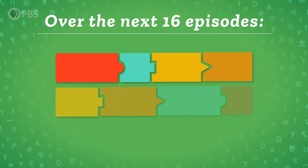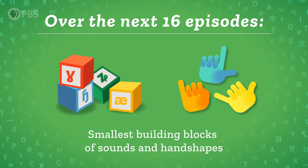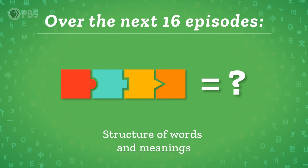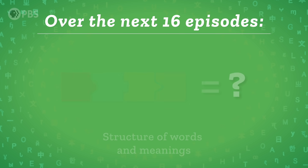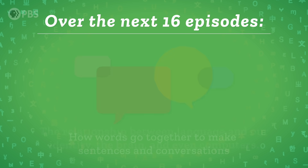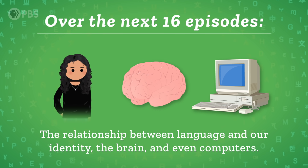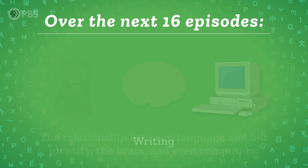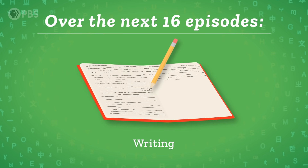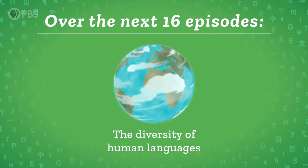Over the next 16 episodes, we'll look at the structure of language, from the smallest building blocks of sounds and handshapes, to the structure of words and meanings, to how words go together to make sentences and conversations. Along the way, we'll also look at the relationship between language and our identity, the brain, and even computers. We'll learn about writing, language acquisition, and the diversity of human languages.